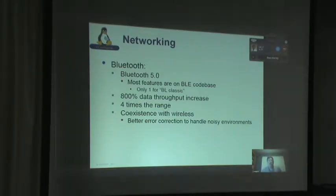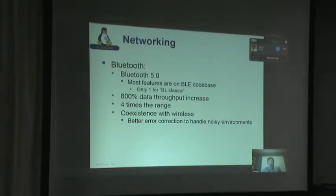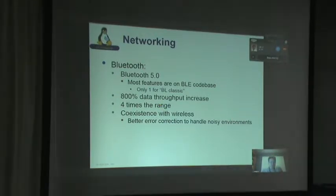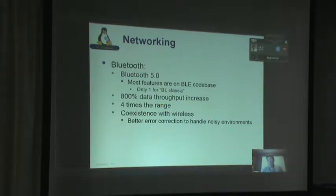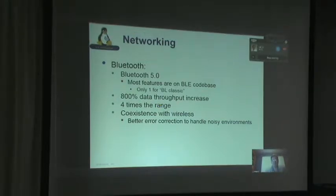In networking, the big news is Bluetooth 5, which has been released. It has about an 800% data throughput increase, four times the range, and better consistent wireless. All of this is supported in the kernel and working well in later kernel versions.